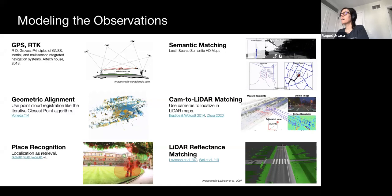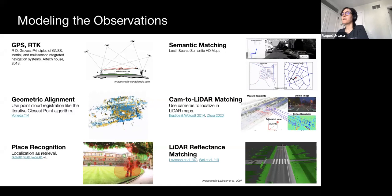Place recognition casts localization as an image or lidar retrieval task. Localization then consists in mapping the sensor readings to a previously seen and localized one via nearest neighbor search.